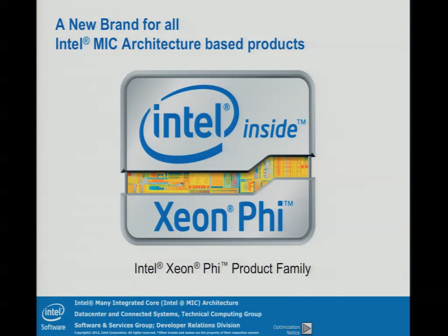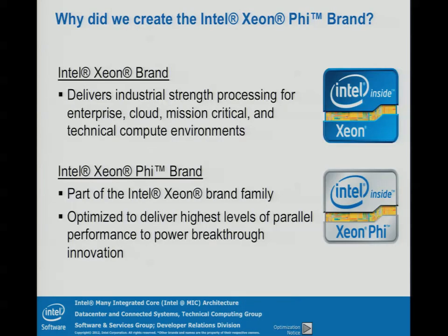Recent announcements: Xeon Phi is the product; Intel MIC is the architecture — the ongoing, overriding many-core technology. Xeon Phi is going to be our external brand for marketing the product. Xeon of course is our workhorse brand — we don't see that going away anytime soon. The huge majority of applications work best on Xeon. When it comes to highly parallel and the direction of highly parallel in the future — highly vectorized, highly parallel codes — that's what the brand is: power performance for highly parallel usage.